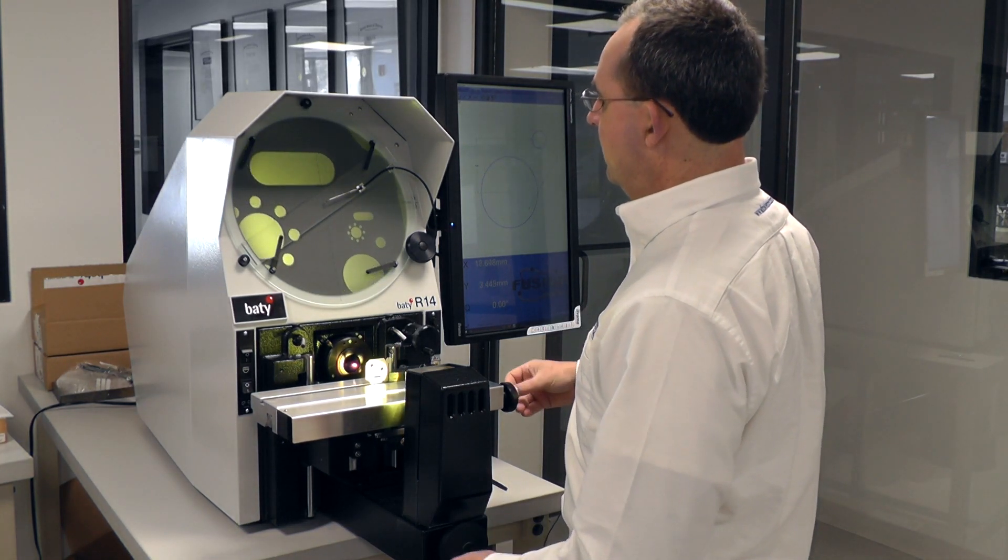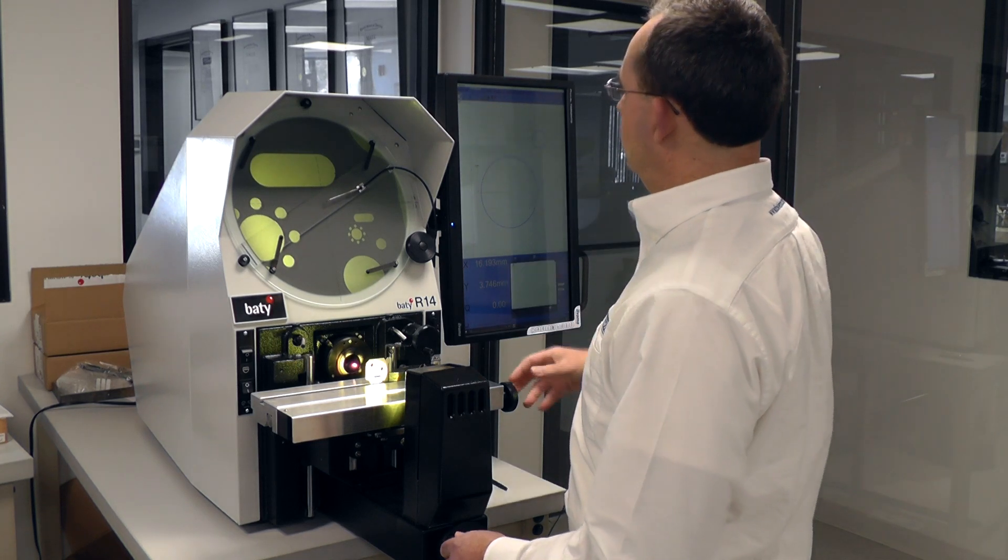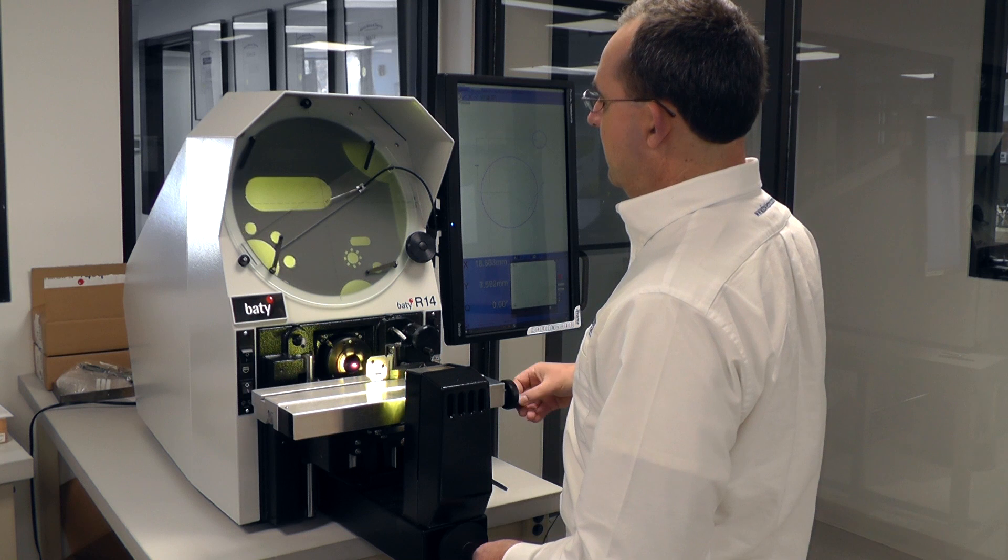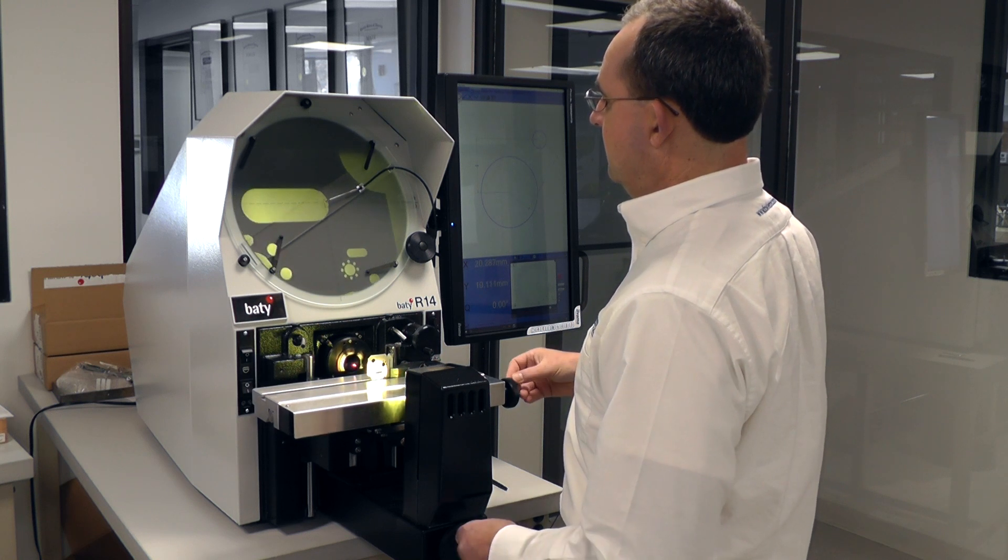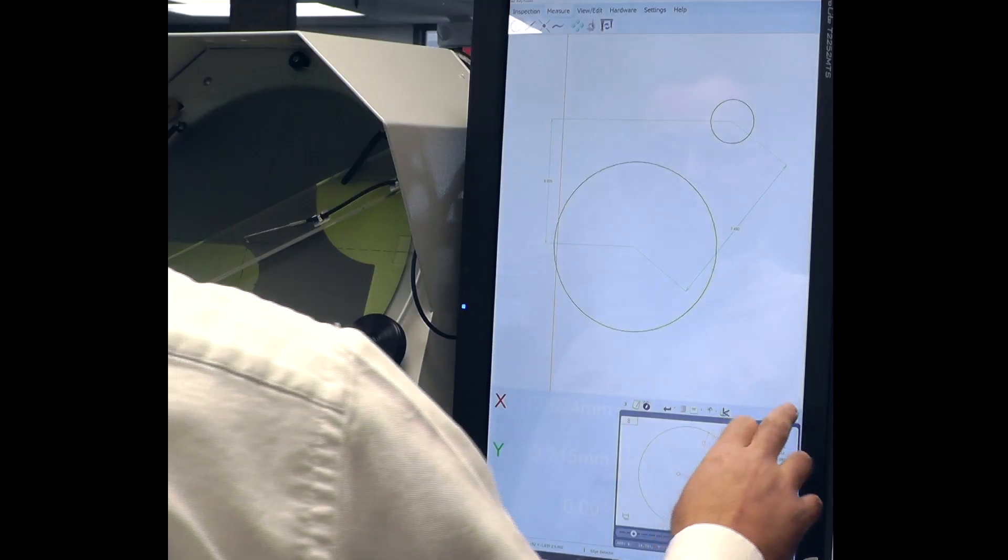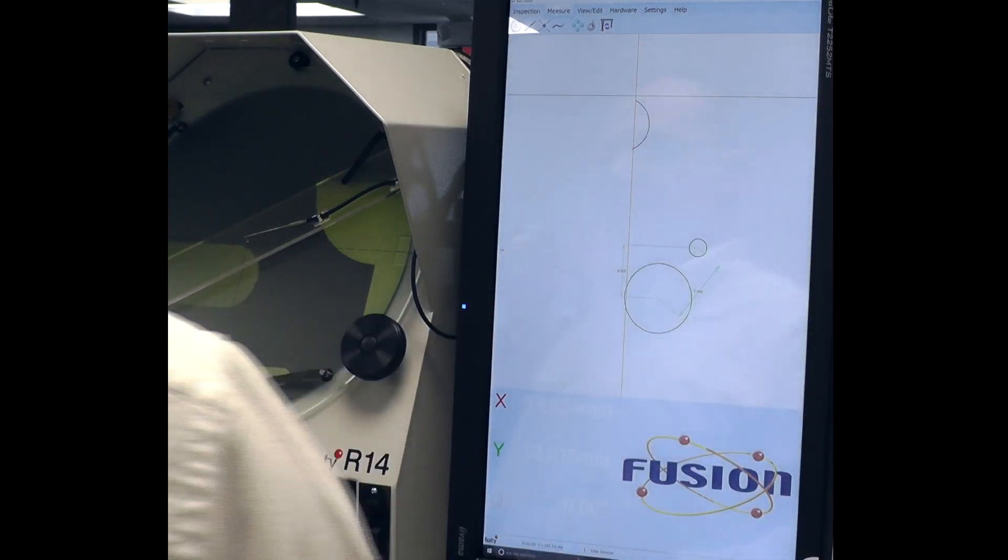I'm going to now measure an arc up here on this slot. Select circle again. Target the features on my arc. Select finish. Got my arc measured.